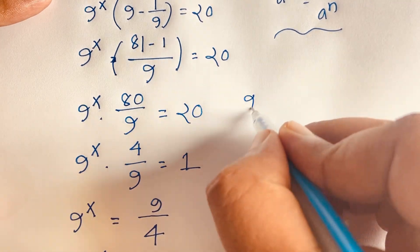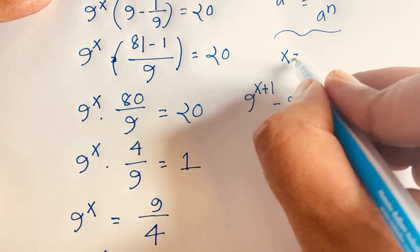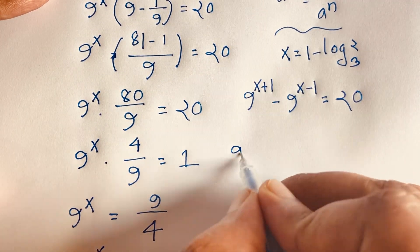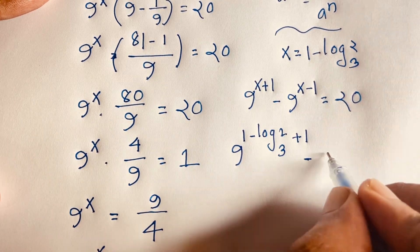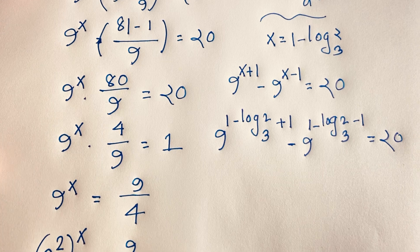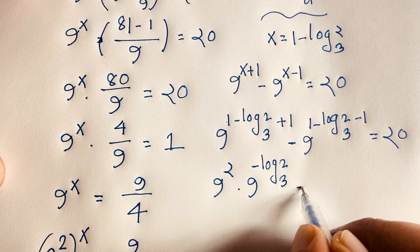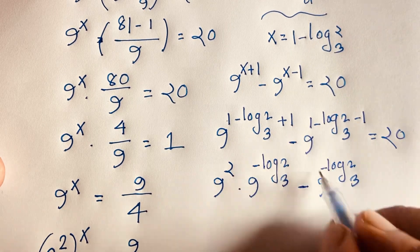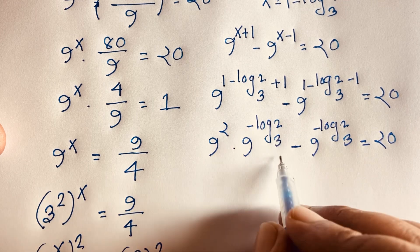We check: 9 to the power x plus 1 minus 9 to the power x minus 1 equals 20, where x equals 1 minus log base 3 of 2. Substituting, we get 9 to the power (1 minus log₃2 plus 1) minus 9 to the power (1 minus log₃2 minus 1) equals 20. This simplifies to 9^(2 minus log₃2) minus 9^(minus log₃2) equals 20. Factoring out 9^(minus log₃2), we have 9^(minus log₃2) times (81 minus 1) equals 20.